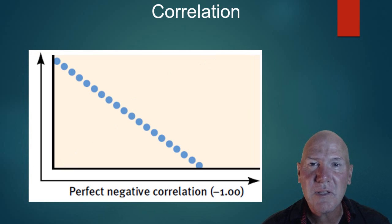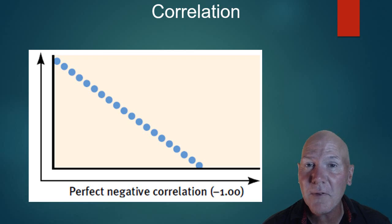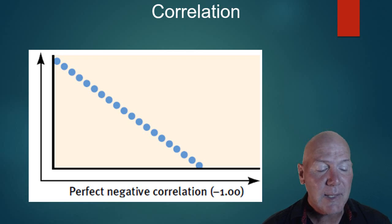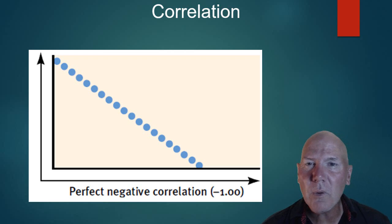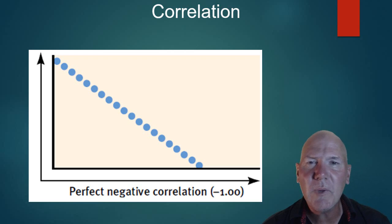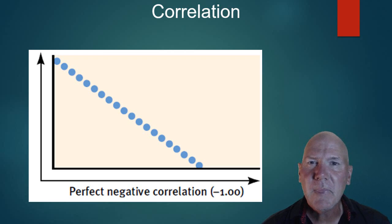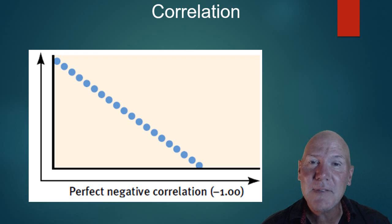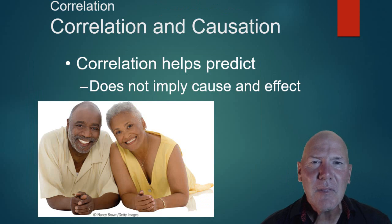A perfect negative correlation means every time A happens, B decreases — and a perfect negative correlation would be negative one. Correlation coefficients not only tell us the direction — whether positive or negative — but also how strong the correlation is. For example, if you're asked which has a stronger correlation: positive 0.5 or negative 0.65, the answer is negative 0.65. Despite being negative, it is more strongly correlated.